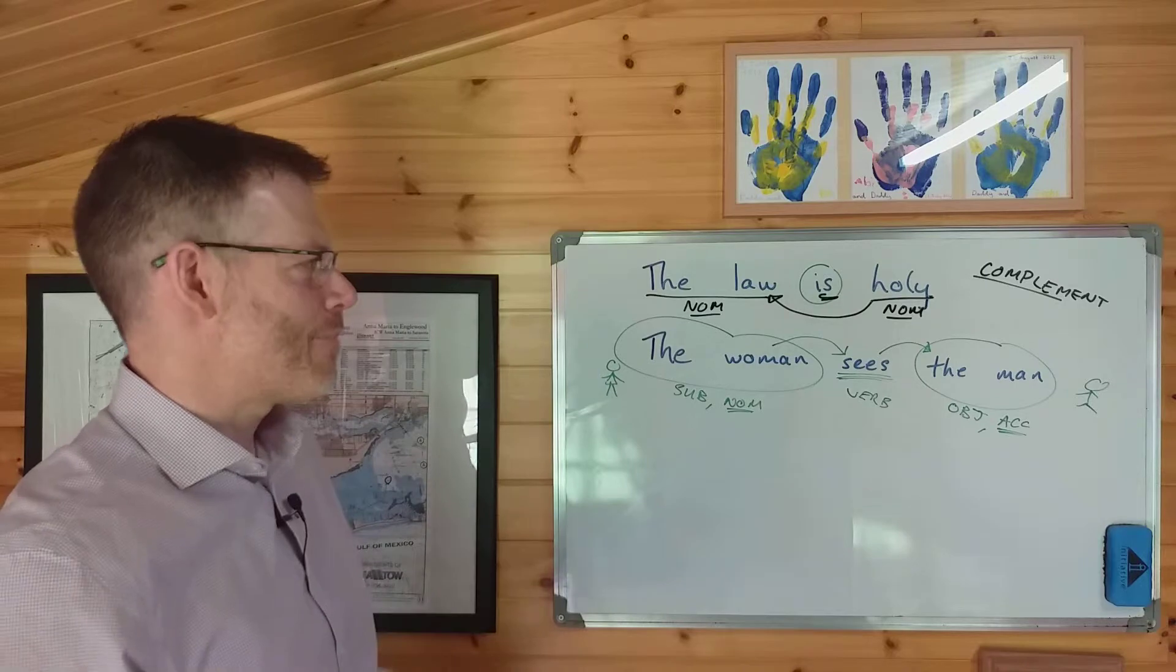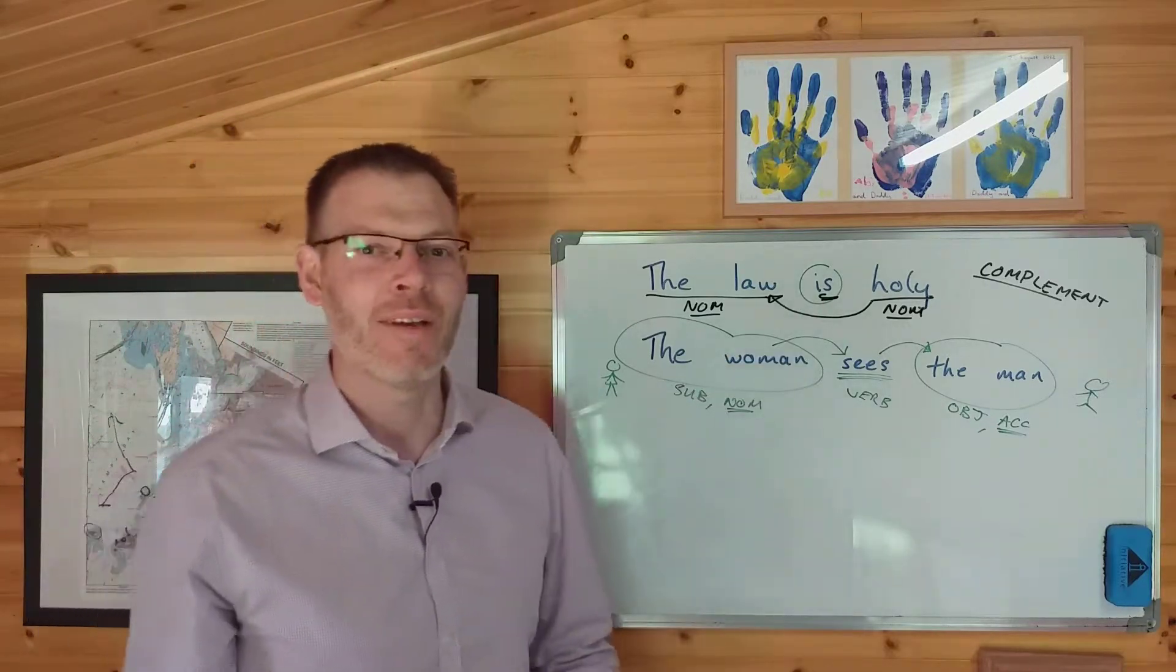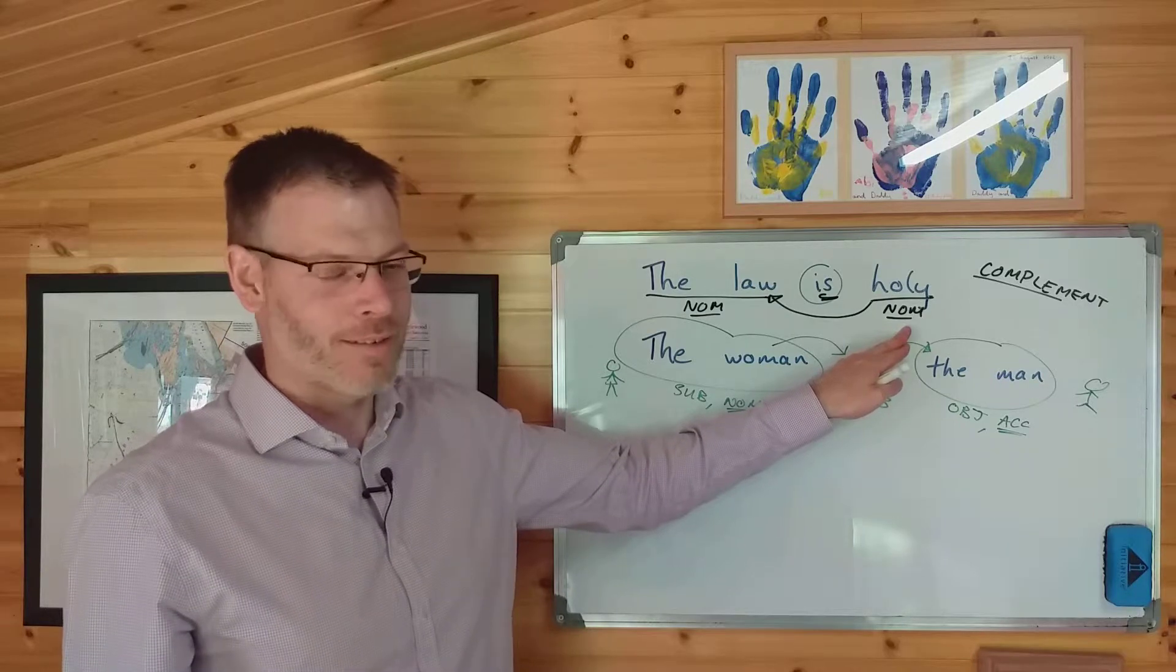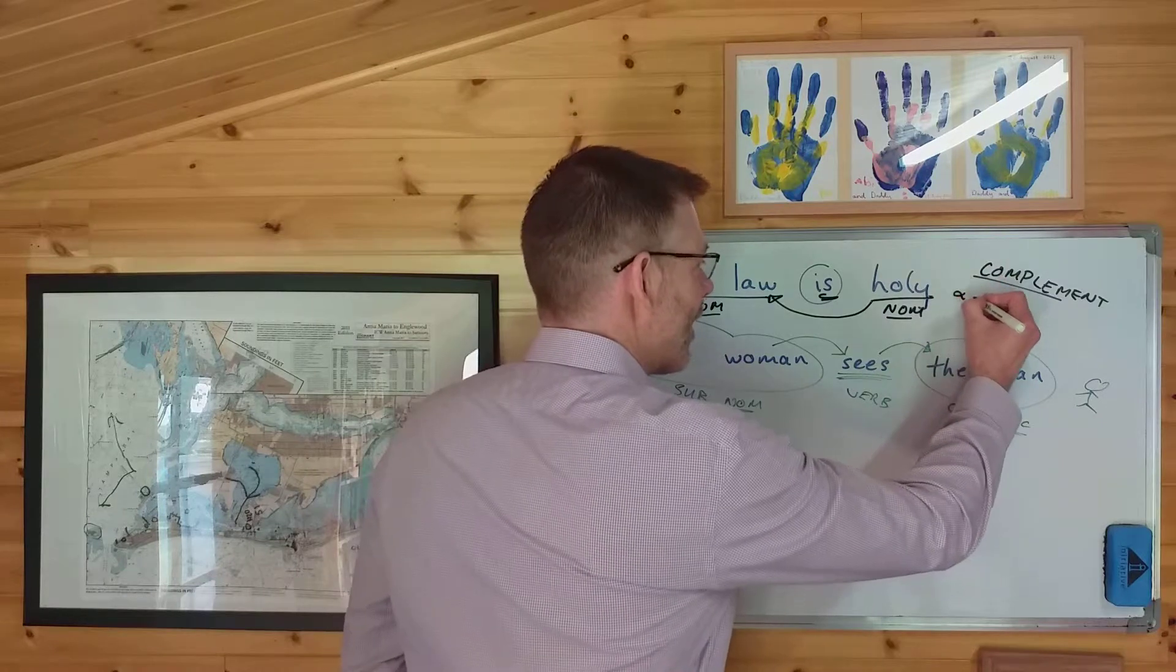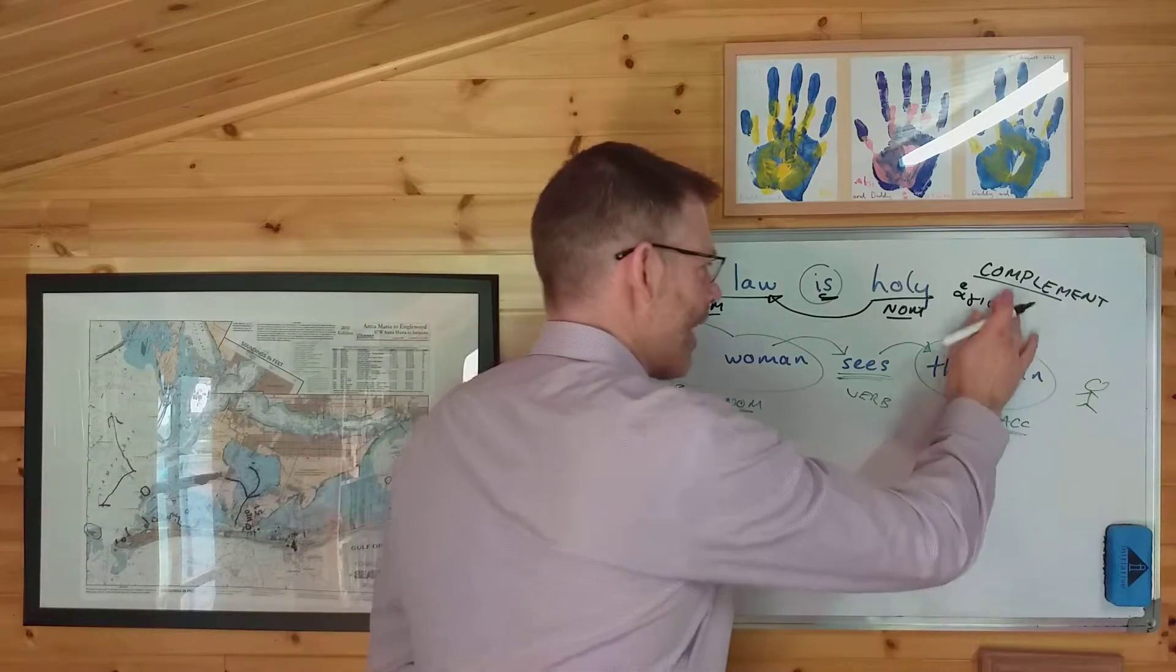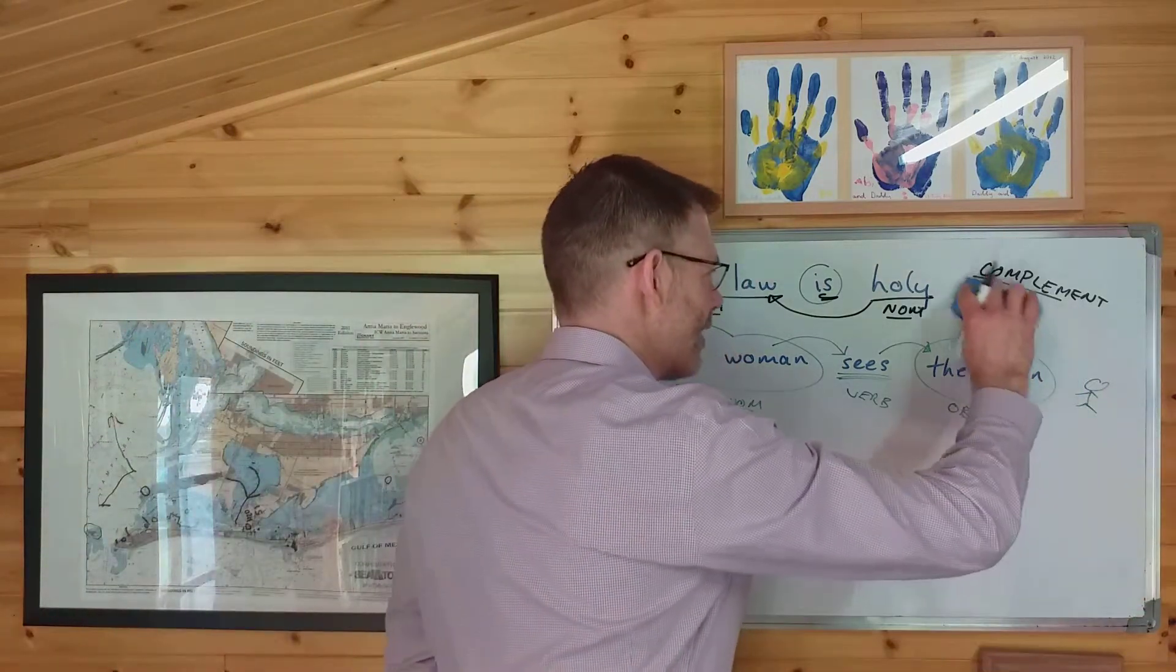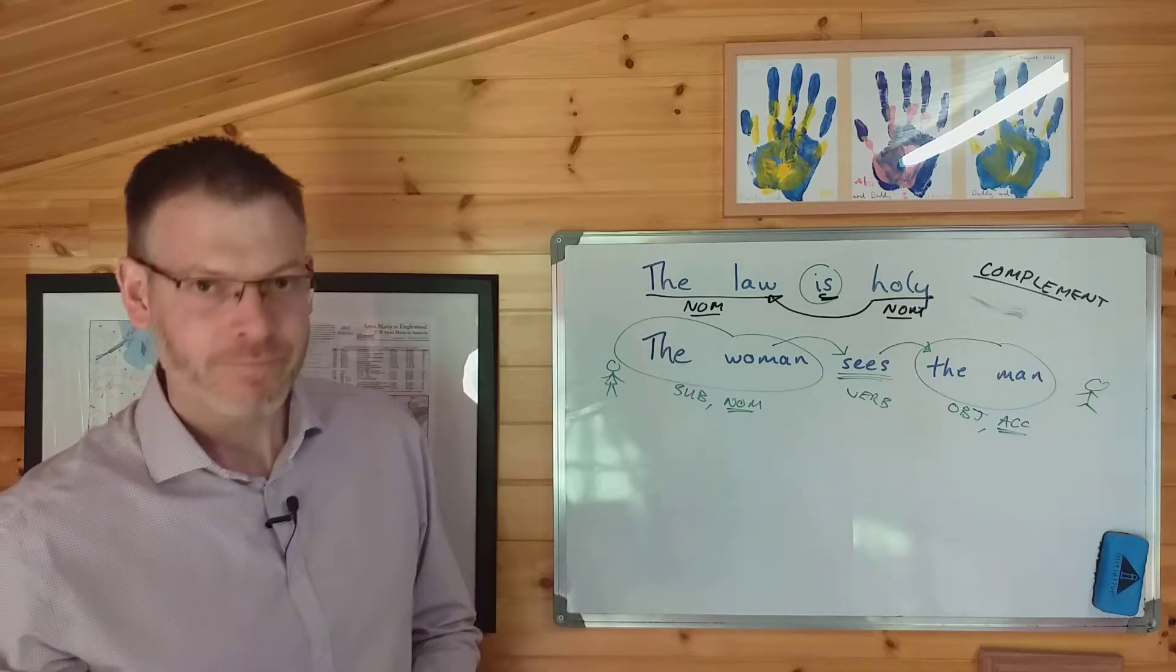And the number one mistake that people make when they translate sentences that have eimi, or the verb to be, in them is that they translate the complement in the accusative. Don't do it. Don't be giving me your translations of the law is holy, where you've got hagion. It's just wrong. Hagios. Because it's not a separate thing. It's not an object. It's a complement. So it goes in the nominative. Okay, so that's the first thing. The first thing that Duff talks about, and there's a little bit of explanation and background to it.